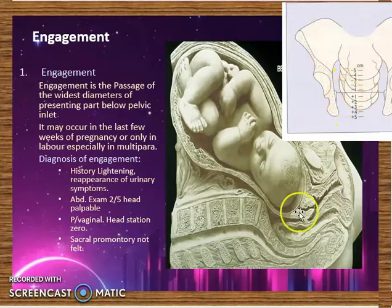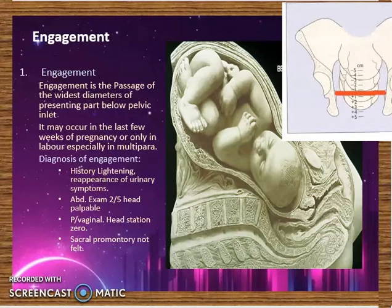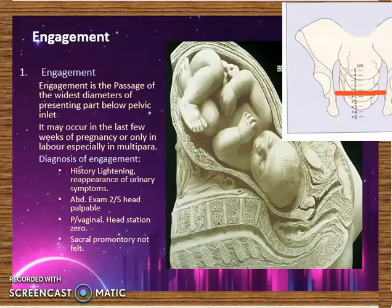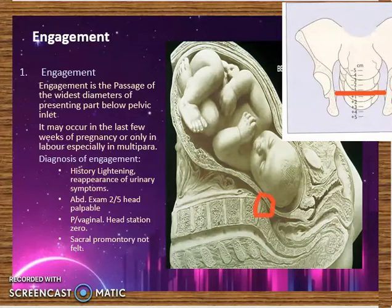On vaginal examination, the sacral promontory will not be felt, and the station of the head will be at zero. Looking at this diagram, there is a straight line from one ischial spine to the other — this is station zero, right on the ischial spines. Counting from the ischial spines going deeper, you have negative one, negative two, up to negative five. Coming lower toward the outlet, it is positive one up to positive five. During vaginal exam, if the fetal head is right on the ischial spines, you will not be able to feel the sacral promontory.